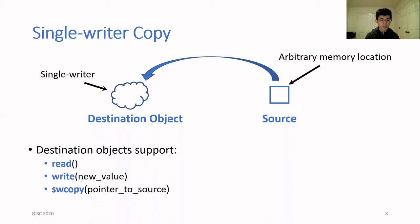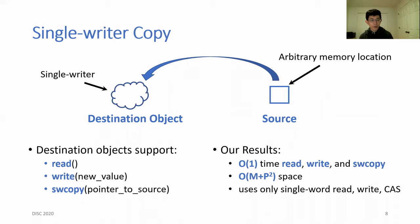Our destination object supports three operations: read, write, and swcopy, which stands for single-writer copy. In our paper, we implement all three operations in constant time using m plus p squared space for m destination objects. Furthermore, our implementation only uses single-word read, write, and compare-and-swap. I was actually a little surprised to see that atomic copy was even implementable in constant time.